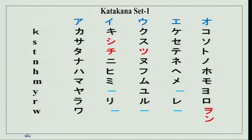It could be a German word, it could be a French word, it could be an English word — anything which is not of Japanese origin is to be written in katakana. This is exactly similar to hiragana. You can see on your screens, in blue, the vowels written on top. Then we have the k, s, t, n, h, m, y, r, and w letters and the sounds associated with them.